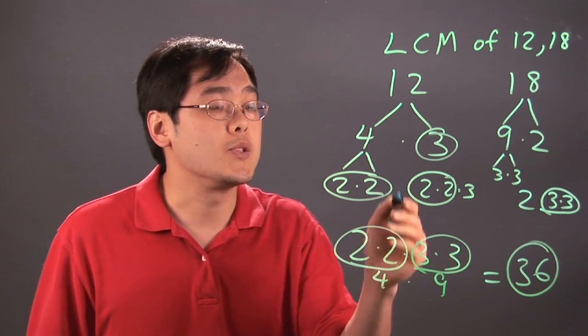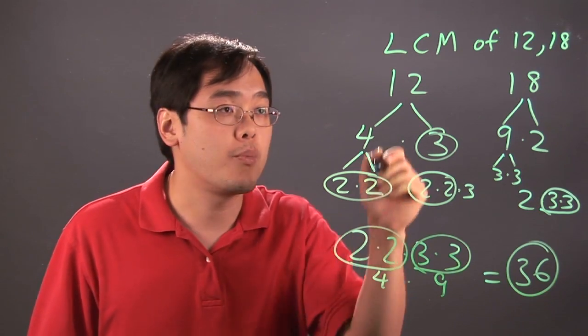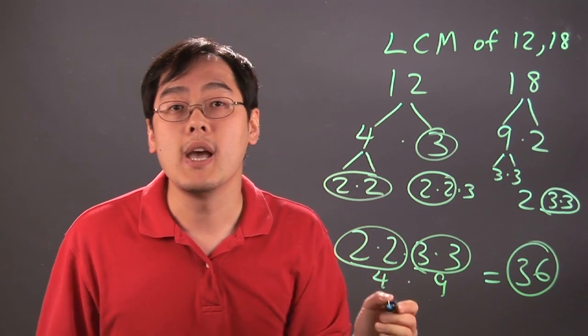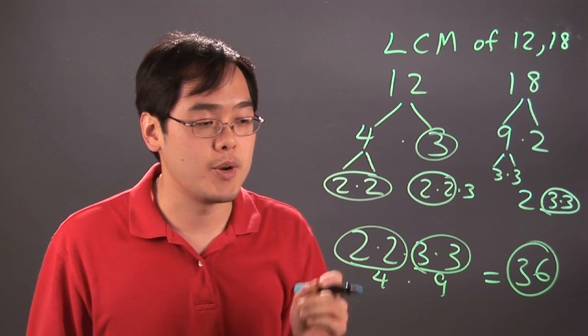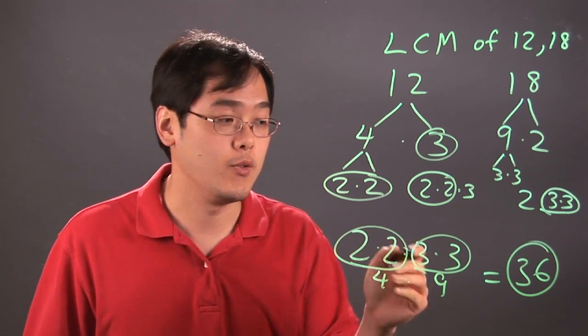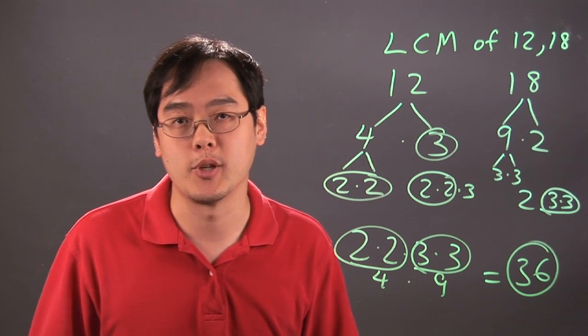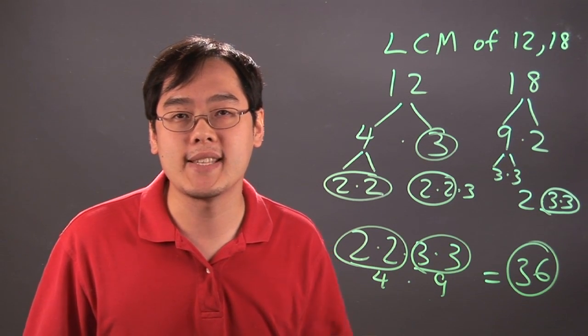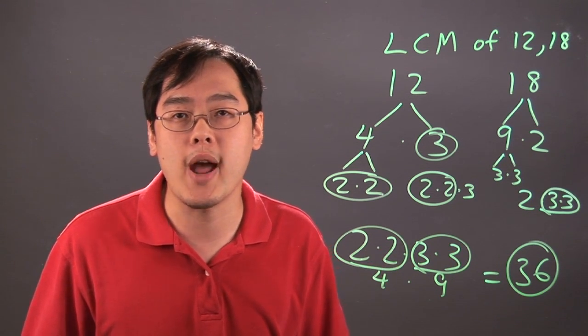But the bottom line is, when it comes to prime factorization, you break up each number as much as possible, and then you circle who has the most number of factors from each, and you'll be good to go. And after you multiply them, you'll have your least common multiple. So I'm Jimmy Chang, and that's how to find the least common multiple using prime factorization.